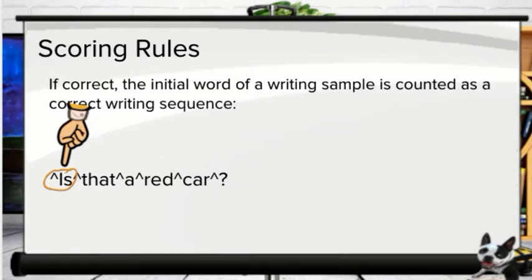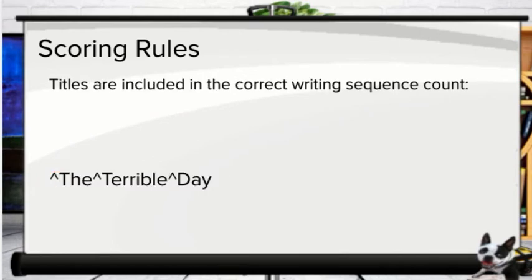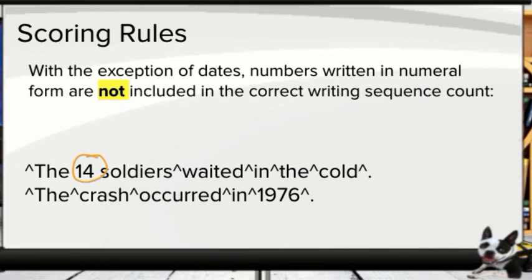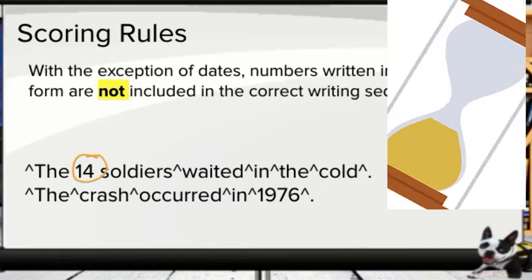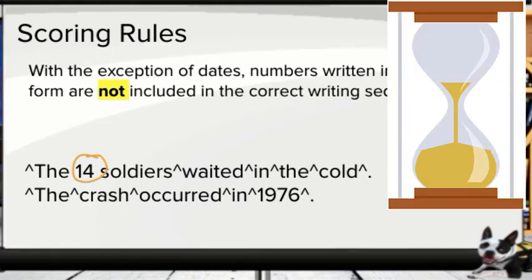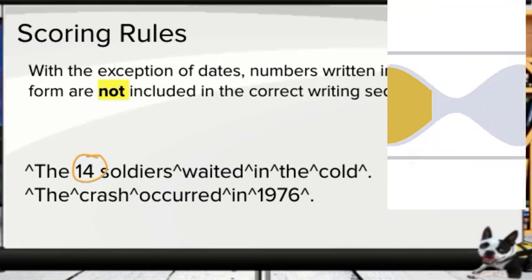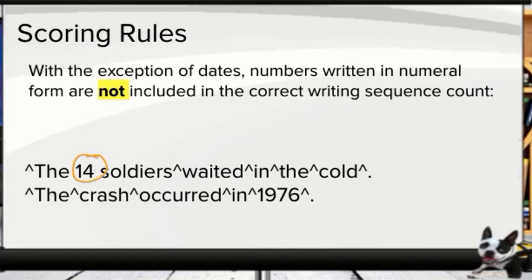If it's correct, the initial word of a writing sample is counted as a correct writing sequence. Titles are also included in the correct writing sequence count. With the exception of dates, numbers written in numeral form are not included in the CWS count. Evaluating writing probes according to correct writing sequence is the most time-consuming of the scoring methods, but it's also the approach that gives us the most comprehensive information about a student's writing competencies.